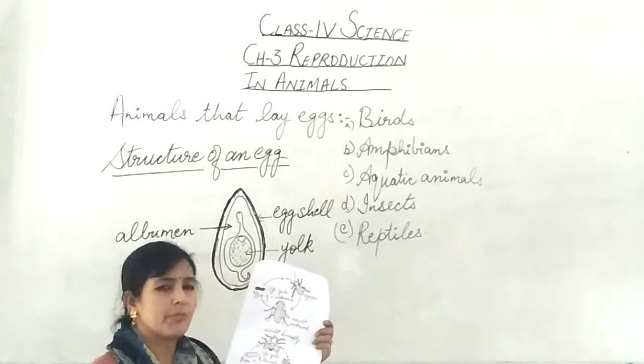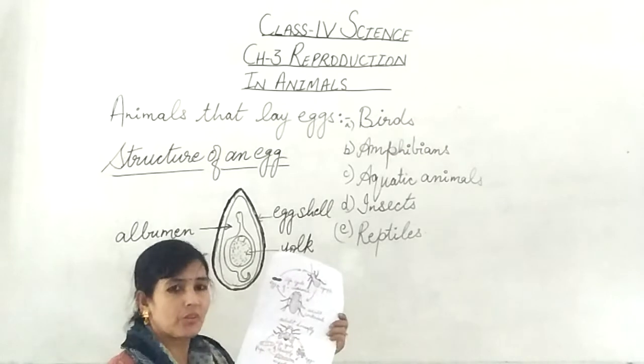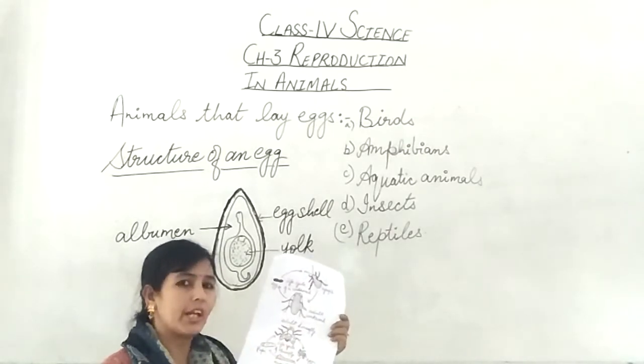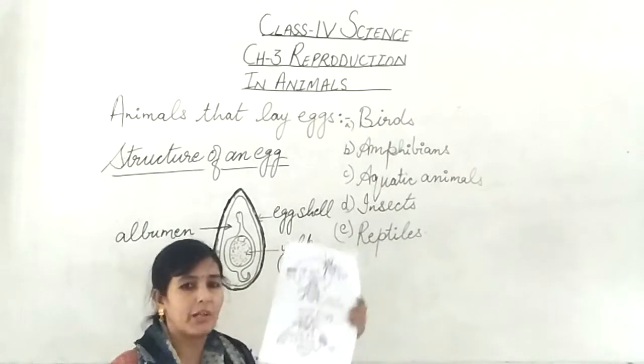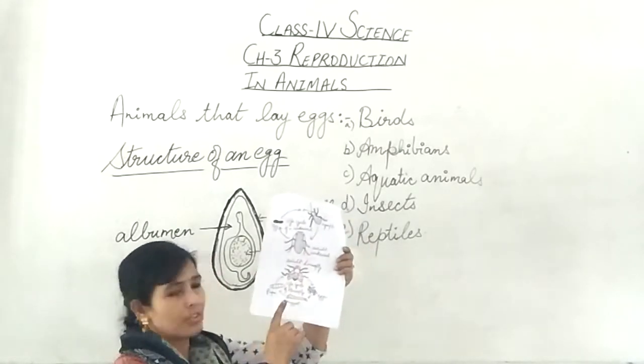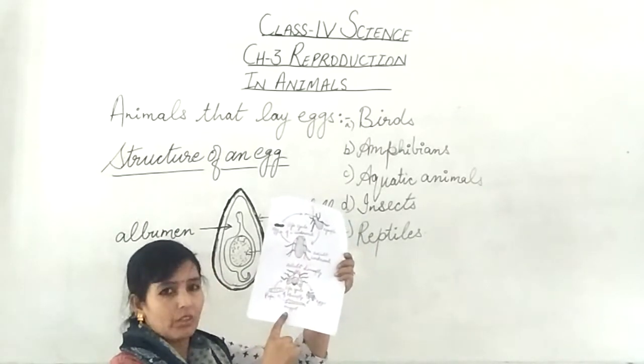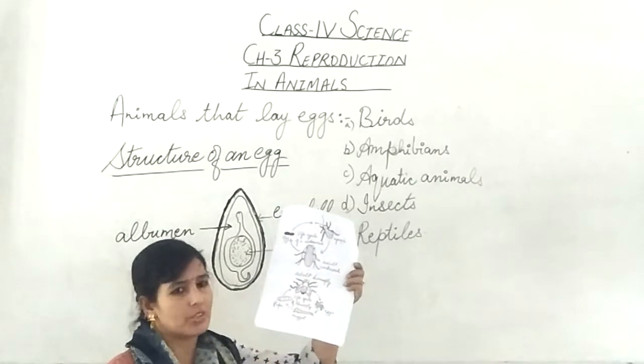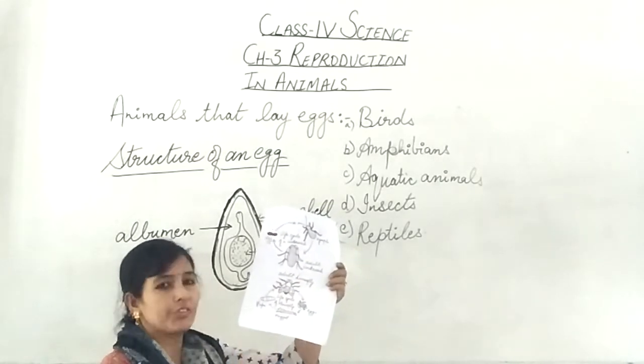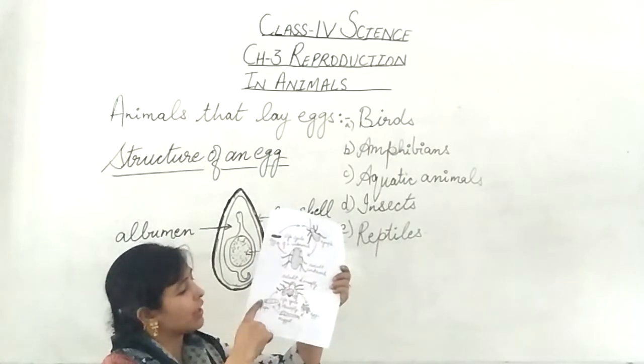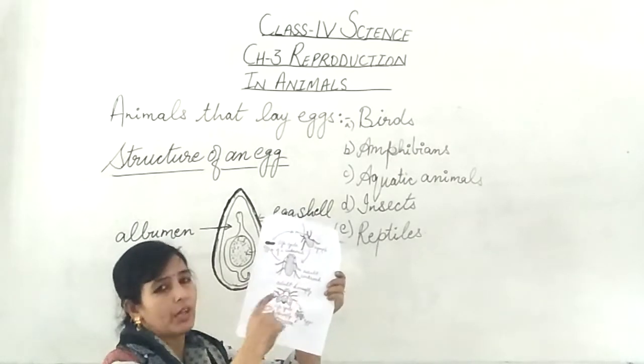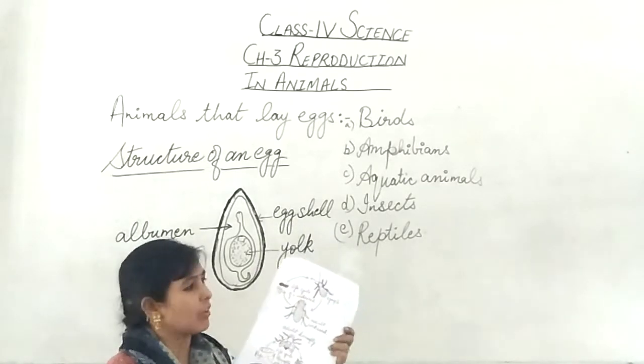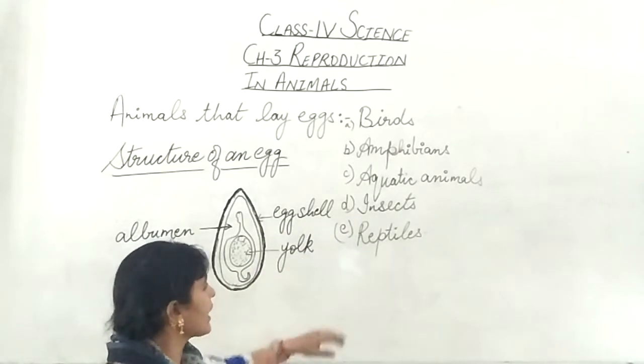But if you talk about some other insects it has four stages. Let's talk about the butterfly. Butterfly also lays eggs. And after laying eggs it converts into a caterpillar or larva stage. This larva moves to a moist place and feeds on leaves. After that it converts into a pupa and then to an adult butterfly. These are the life cycles of the animals that lay eggs.